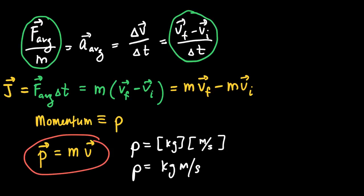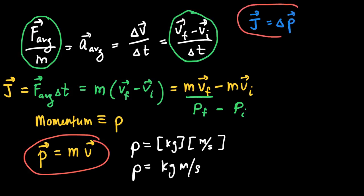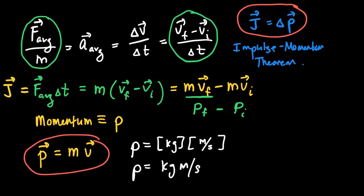Since a change in momentum — m times v-final minus m times v-initial — equals impulse, momentum and impulse share the same units: kilograms meters per second. In the full equation, J equals F times delta-T equals m times delta-v, the term m times v-final is the final momentum and m times v-initial is the initial momentum. So impulse equals p-final minus p-initial, which is a change in momentum. The fact that impulse equals delta-p is called the impulse-momentum theorem, analogous to the work-energy theorem.